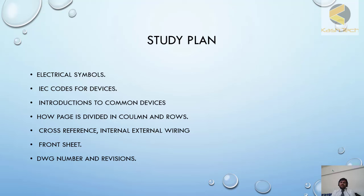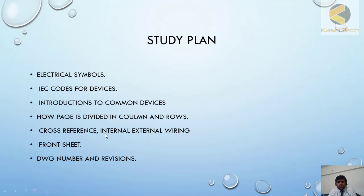I have also included a drawing in this lecture that you can take and study on your own — this is how you can practice. Then I have shown how a page is divided into columns and rows, how you can locate and identify the address of any specific device in the drawing, and how addressing is done. I have also explained how cross references are created, and internal and external wiring. From the very basics, I have started to explain the front sheet and what you can read from it, along with a little about drawing and revision numbers.